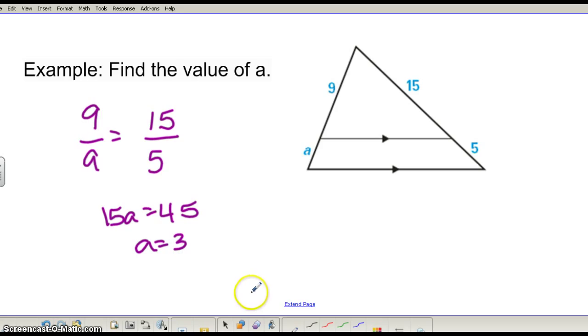Now see if you could come up with a different proportion and still get the same result. So how about we do, let's do A is to 5. How about that? A is to 5. So lower left to lower right. And this should be the same as 9 is to 15. So upper left to upper right. If we cross multiply and solve, notice we still get 15A equals 45, A equals 3.